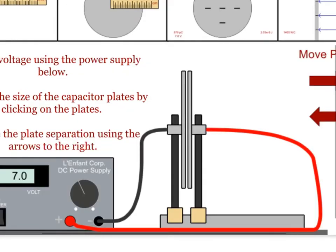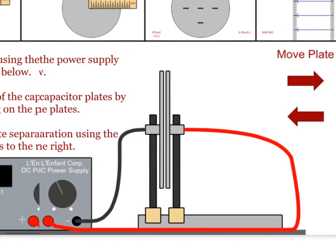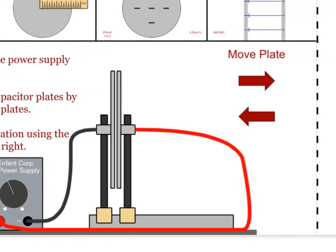To change the size of the plates, students simply click on the plates and it will cycle through a few different preset sizes. The size of the plates will be set when the program opens and they will not change once the program is open — you'll just cycle through the possible sizes.